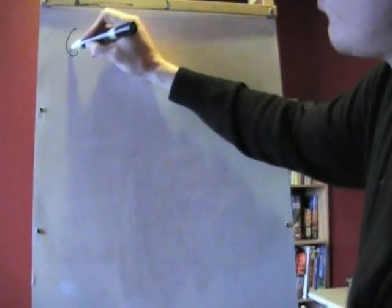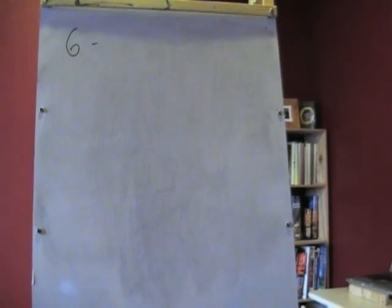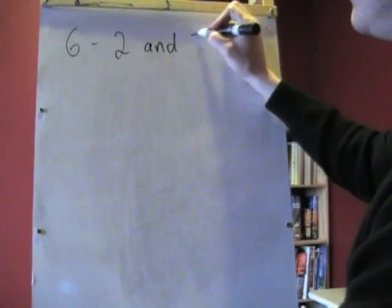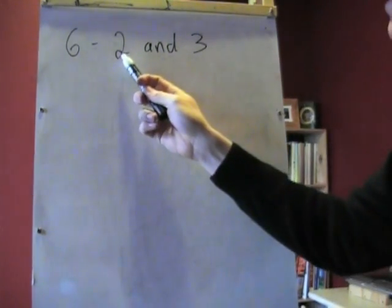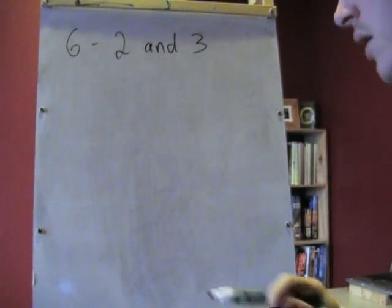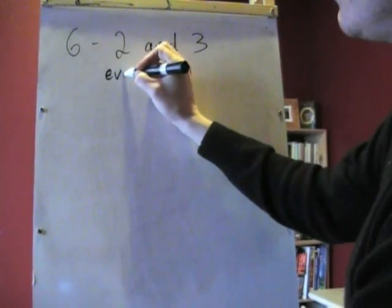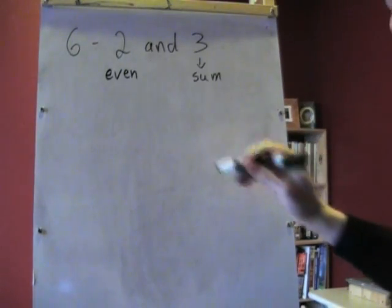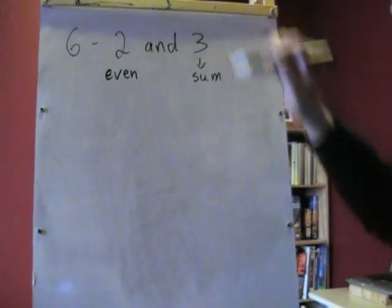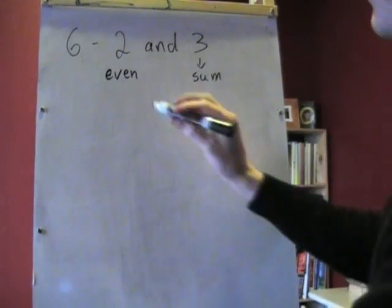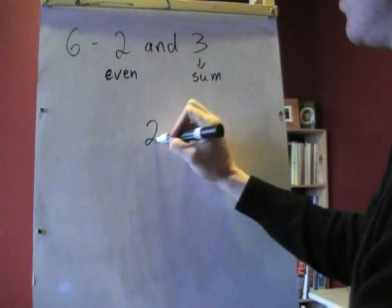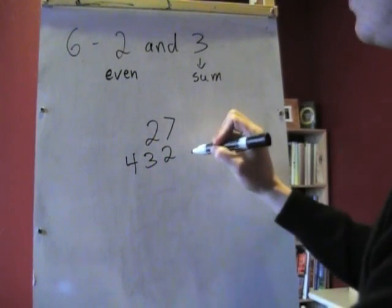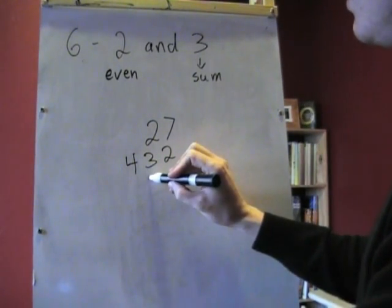The next number we can check for is 6. 6 is actually kind of nice because 6 is 2 times 3. So all we have to do is look for the things that we knew about 2 and the things we knew about 3. We knew that for 2 it was everything even, and for 3 it was the sum of the numbers. So if it's even and it has a sum that's divisible by 3, then we know that it will divide into 6. So let's go ahead and pick some numbers here: 27, 432, and 72.